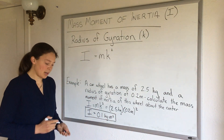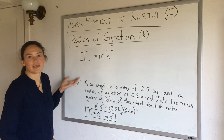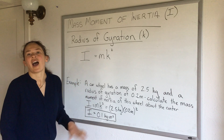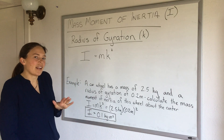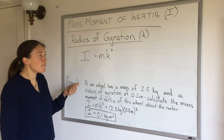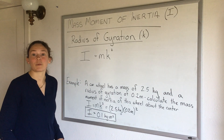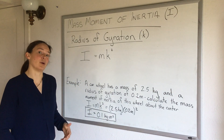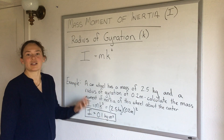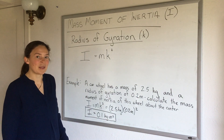Anytime I see a problem that has given me a radius of gyration, I sigh a little sigh of relief, because this is, in my opinion, by far the easiest way to calculate mass moment of inertia — when we're just given the radius of gyration.